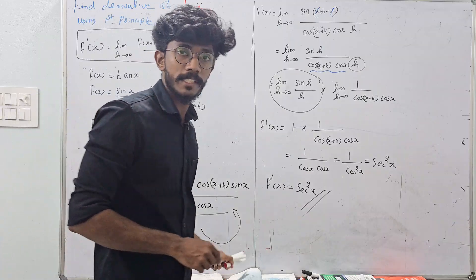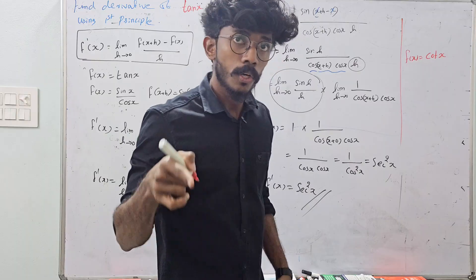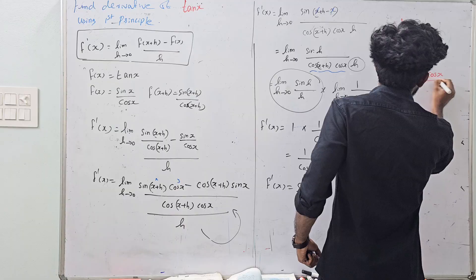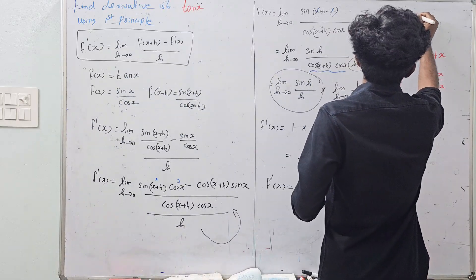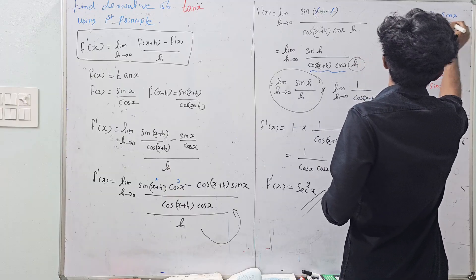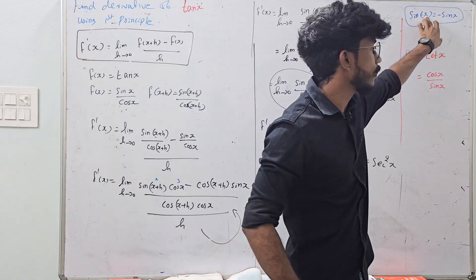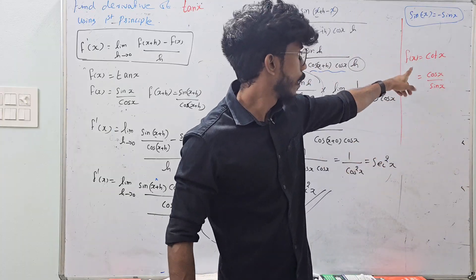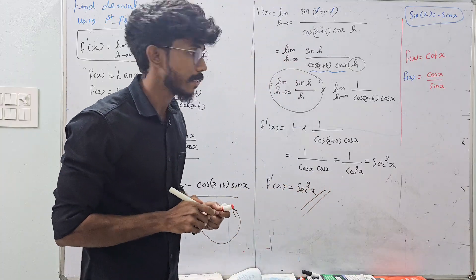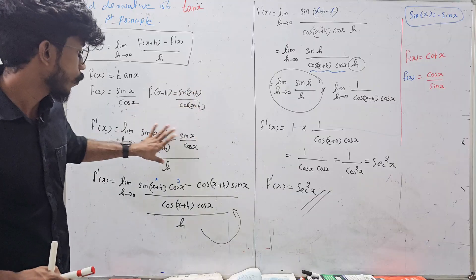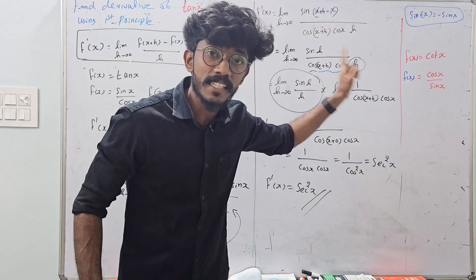Now let's do cot x. f(x) = cot x = cos x / sin x. Similarly, f(x+h) = cos(x+h) / sin(x+h). How do you find f(x+h)? Try this in the comment box using the same steps as tan x.